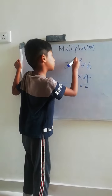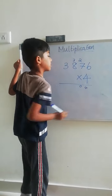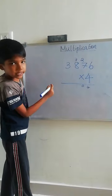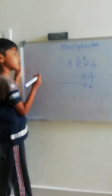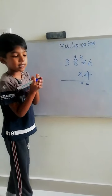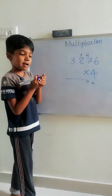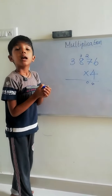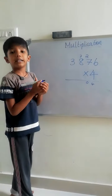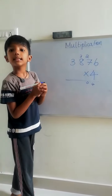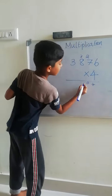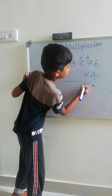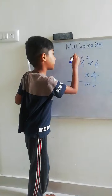4, 8 are 32. Now in 32, we want to add 3. 33, 34, 35. Here we want to put 5. Here we want to put 3.